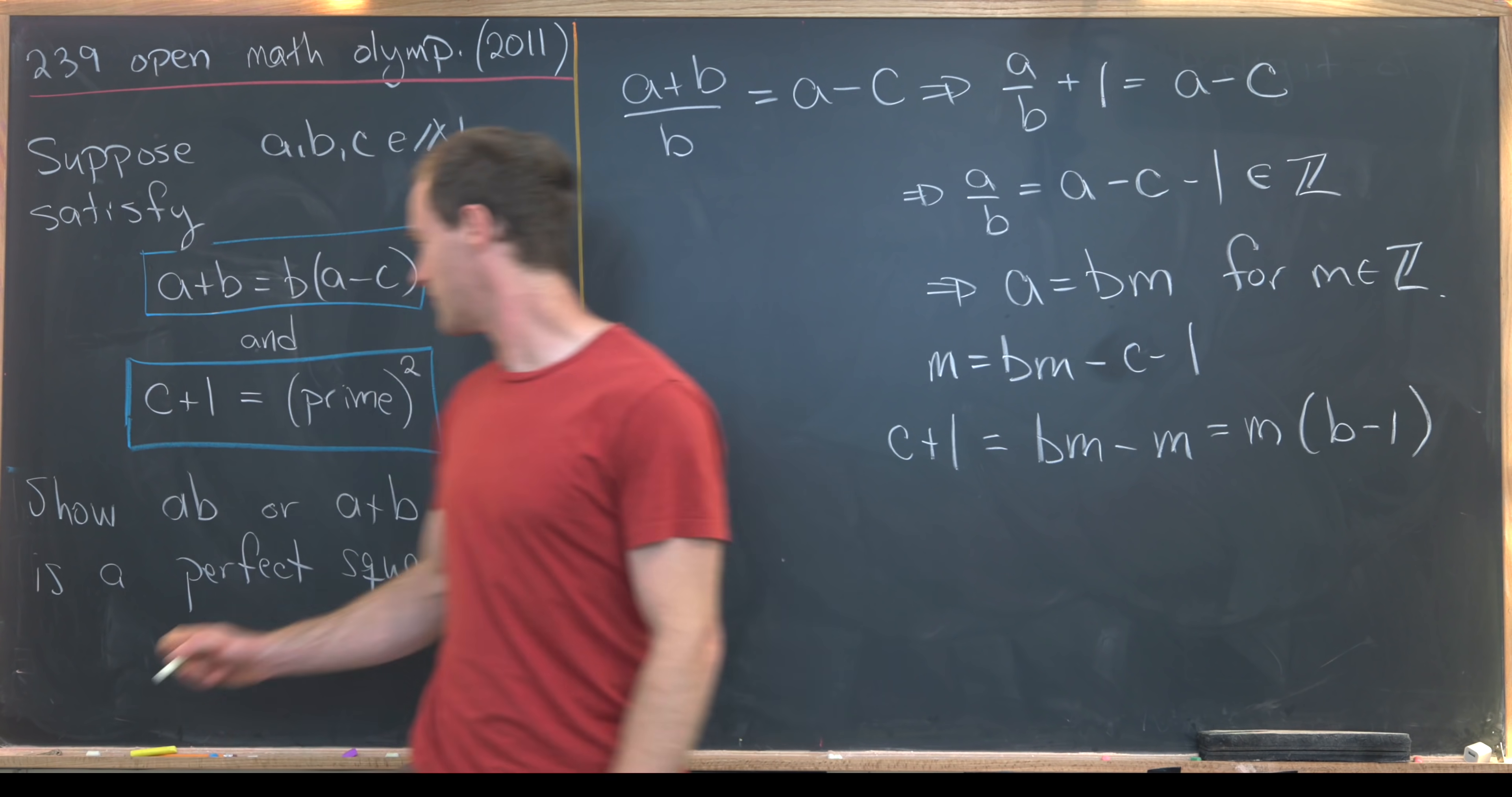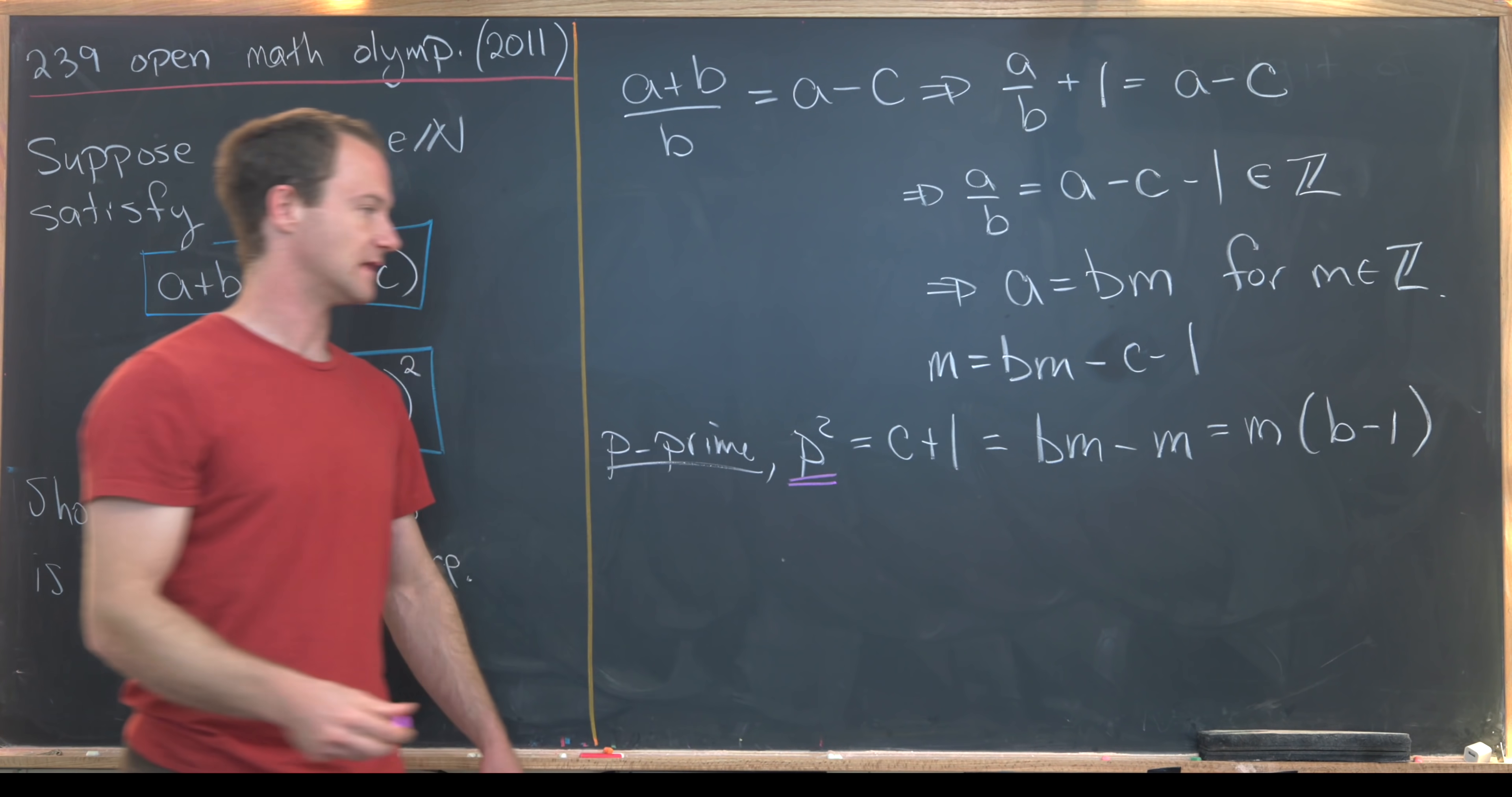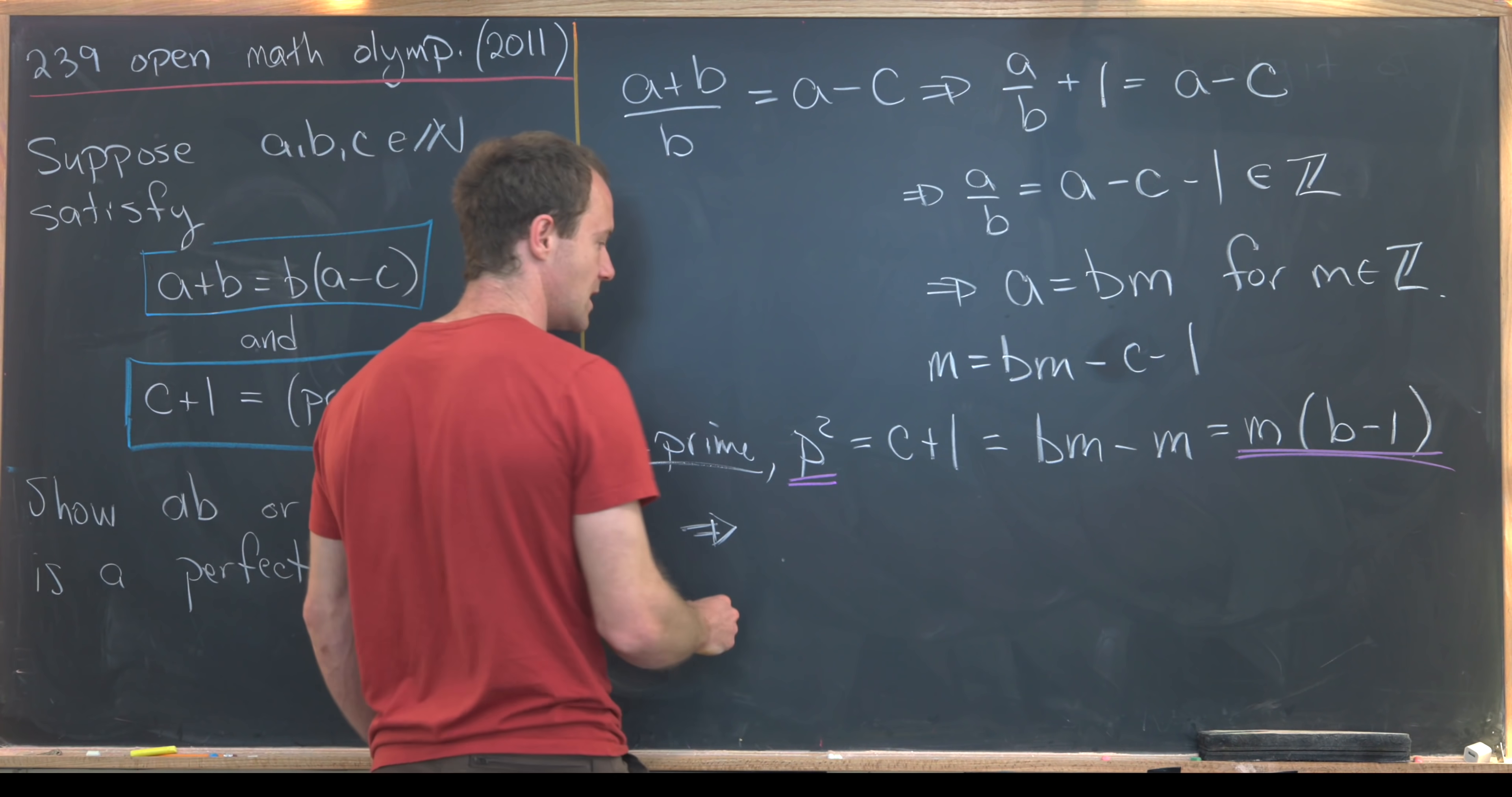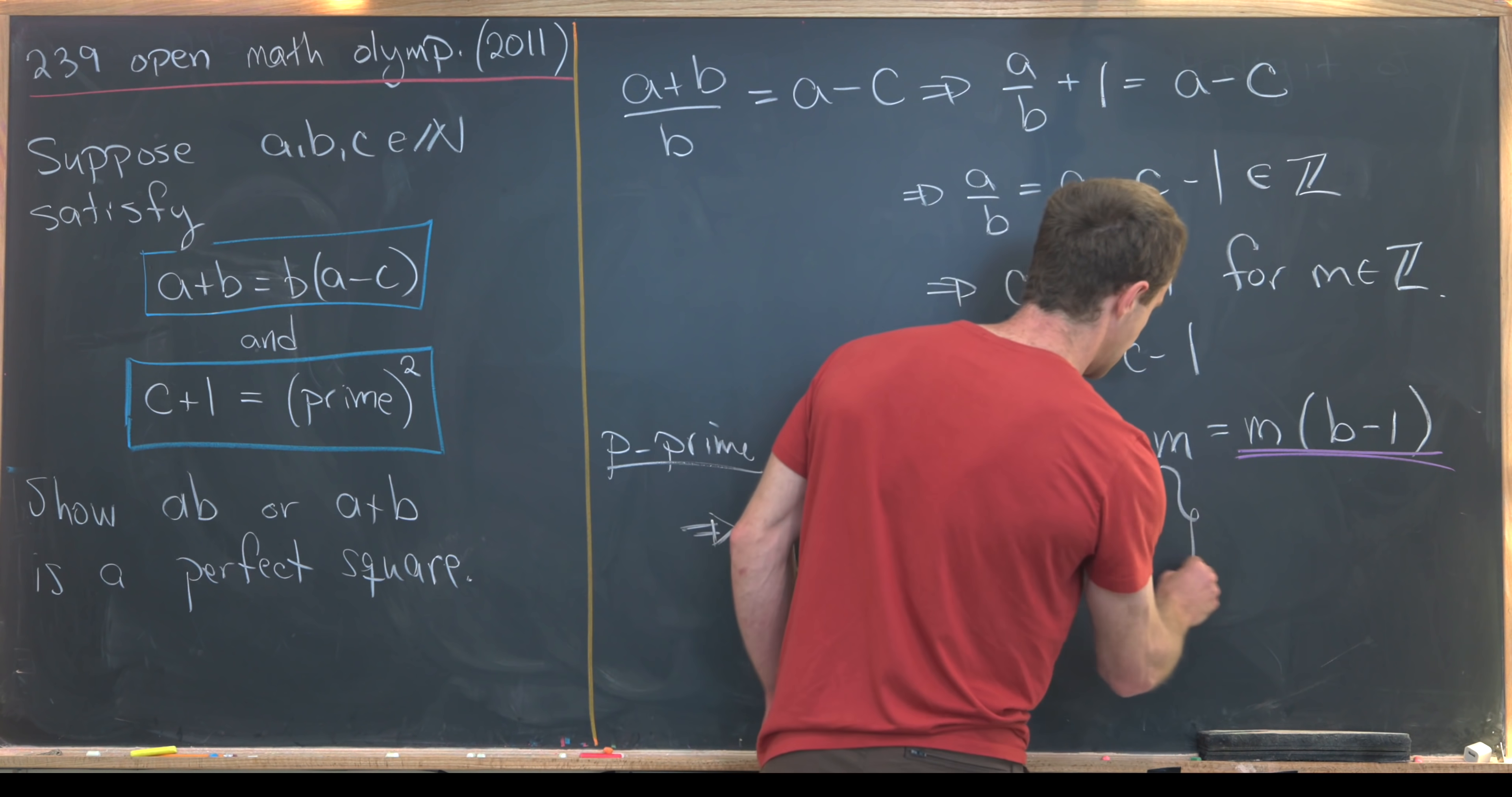But let's recall that we were given that c+1 is a prime squared. So I'll set this equal to p² where p is our prime number. Now that's actually extremely helpful because we have p² on the left hand side of this long equation and then we have a multiple of m on the right hand side. But that tells us that p² is a multiple of m. In other words, m divides p². But if m divides p², that only gives us a couple of different values that m could take. m could be from the set {1, p, or p²}.